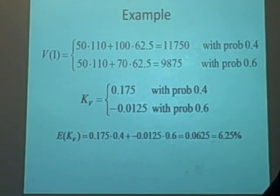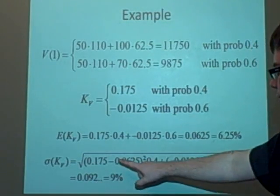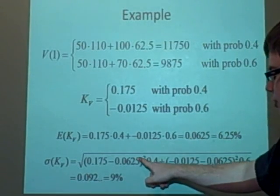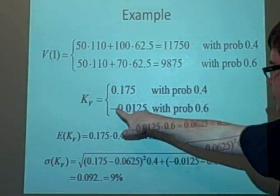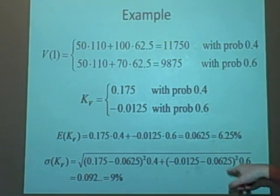Now we want to find the standard deviation or the risk as we call it. And this is a little bit more complicated, which is the upper part minus this expected return all squared times the probability, and then we've got the lower part minus the expected return all squared times 0.6, which gives us a risk of about 9%. I hope that was useful.